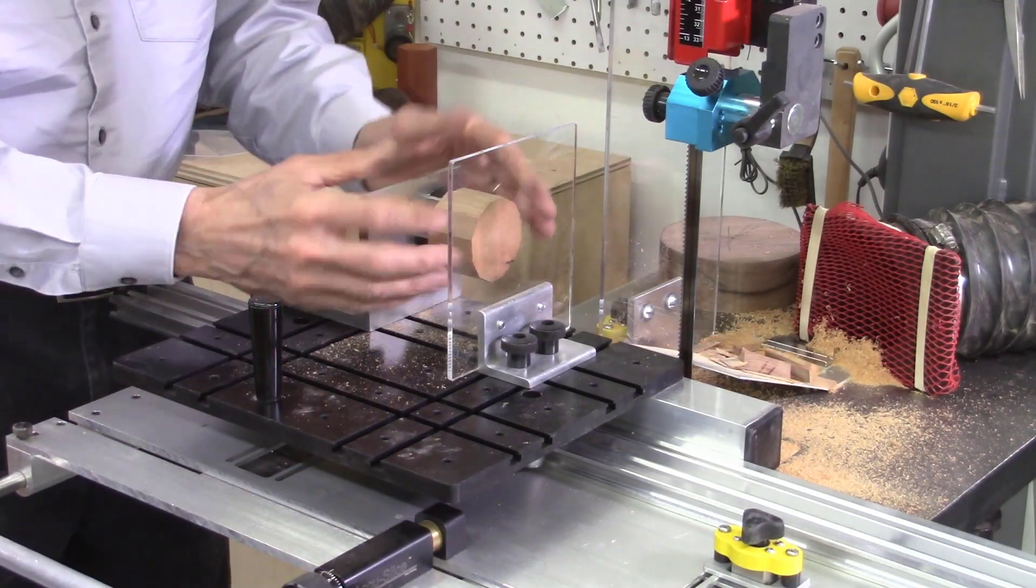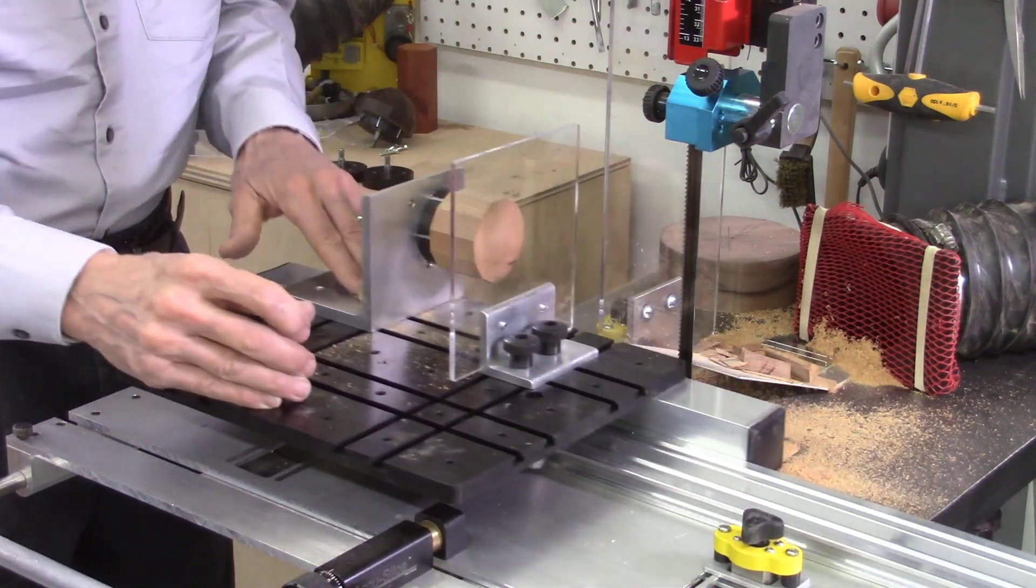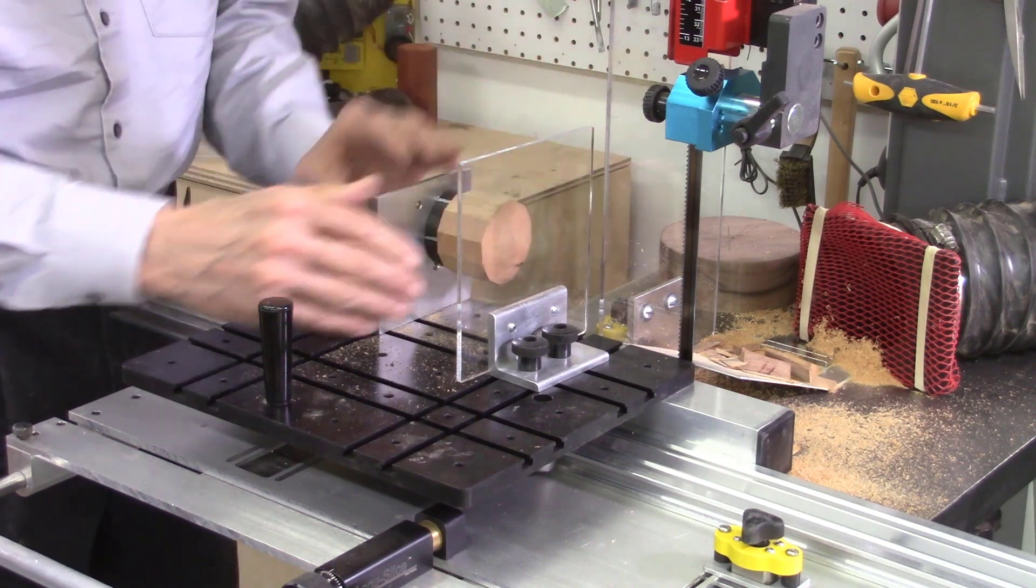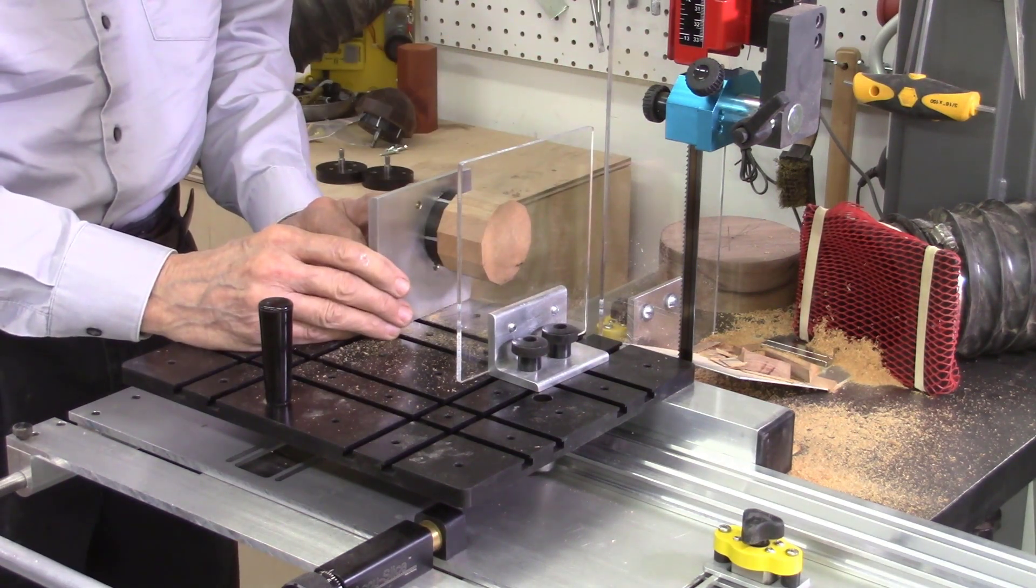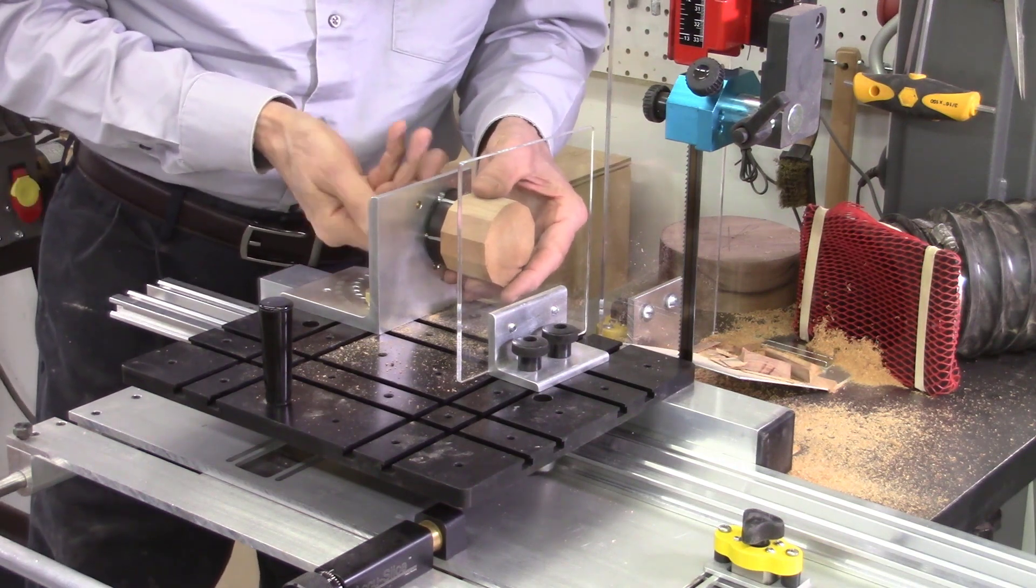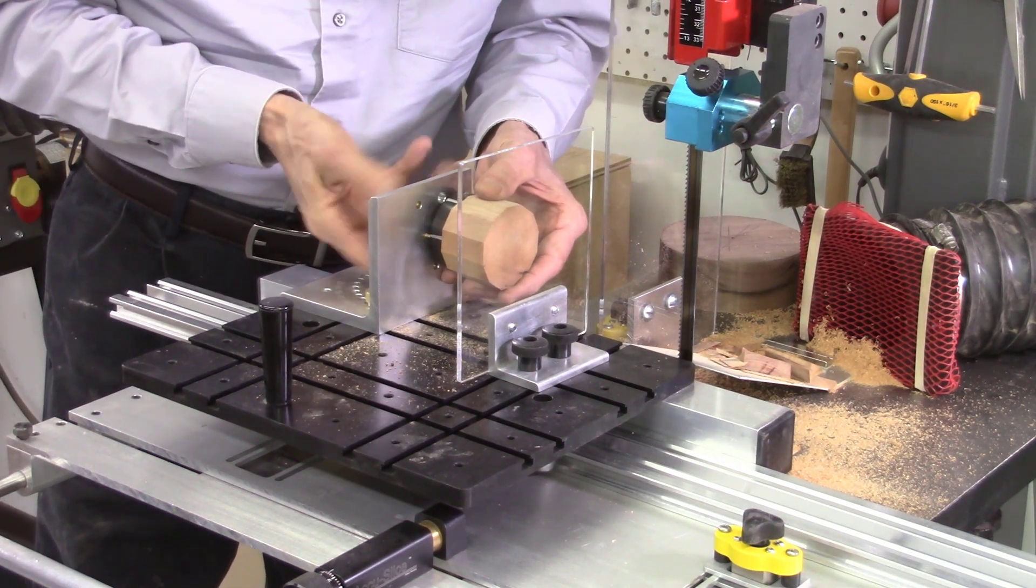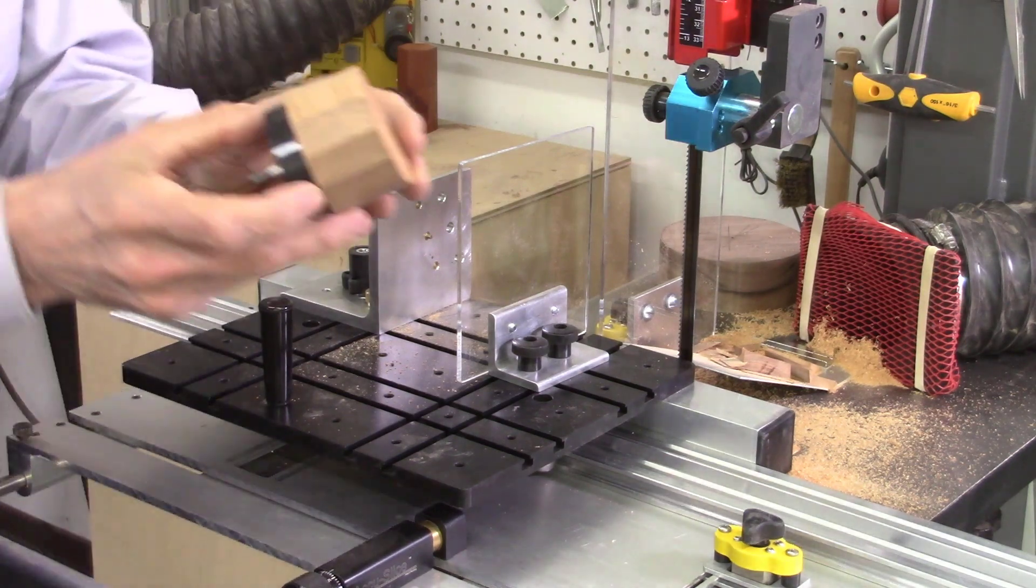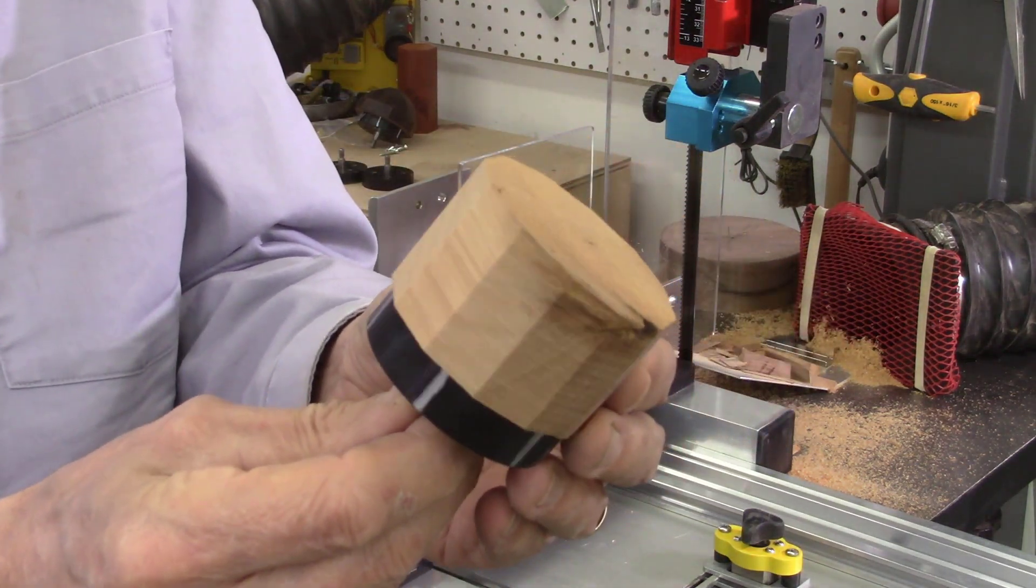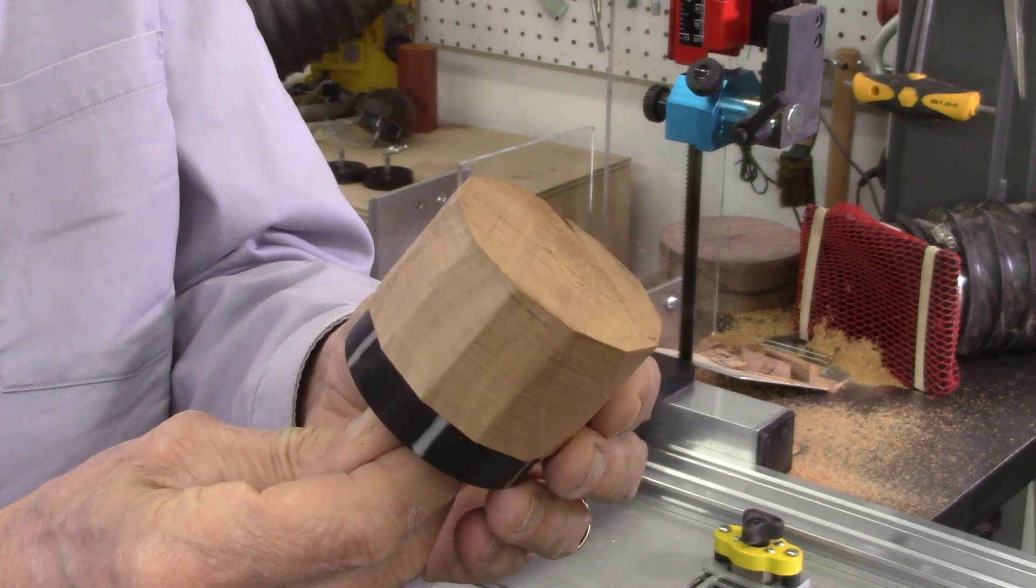If you notice, every time I did a cut and did an adjustment, I made sure I pulled this back so these safety shields were in front of the bandsaw blade. Again that just keeps my hands far away from that bandsaw blade and makes sure everything is safe. So I got my first 12 cuts on this block of wood. And there's my first set of cuts.